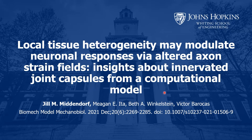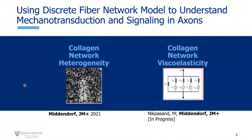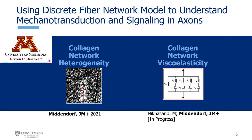Thanks for the introduction. The title of the paper I was asked to talk about is long, but in a nutshell this work is about using discrete fiber network models to understand mechanotransduction and signaling associated with axons. The paper focuses on the effects of collagen network heterogeneity — how within a tissue one region might have one density of collagen and another region a different density, and how this affects the axon. I'll also briefly discuss collagen network viscoelasticity, unpublished work done during my postdoc at the University of Minnesota in Victor Barocos' lab.